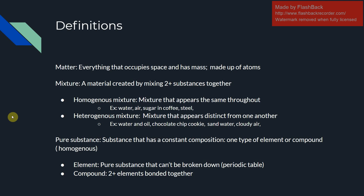A mixture is a material created by mixing two or more substances together. You're going to either have a homogeneous mixture — a mixture that appears the same throughout. For example: water, air, when you dissolve sugar into coffee, steel — these all appear the same and don't have differences in them.